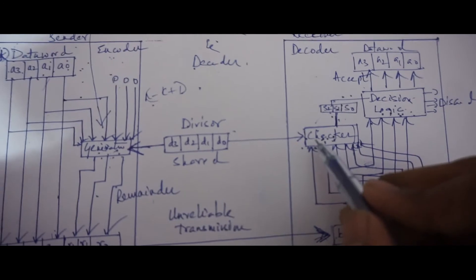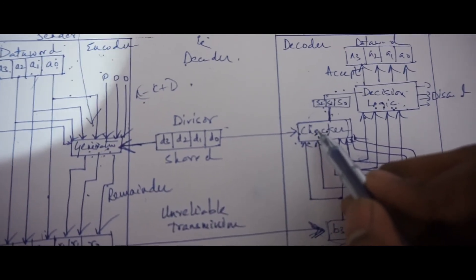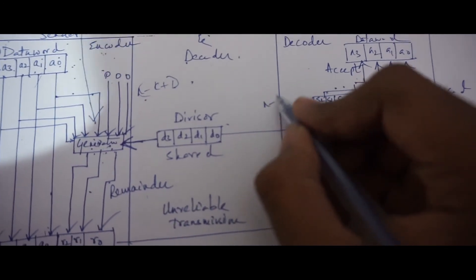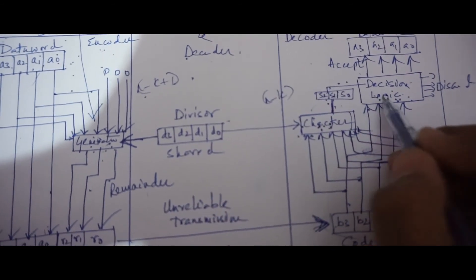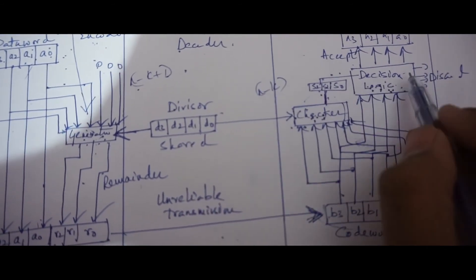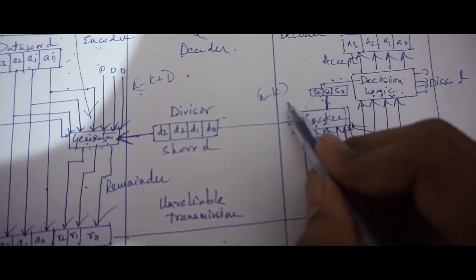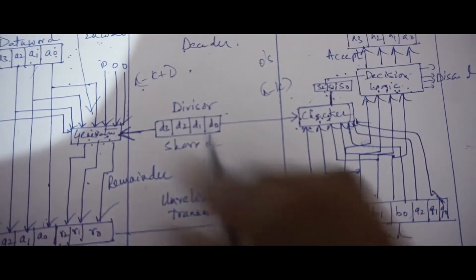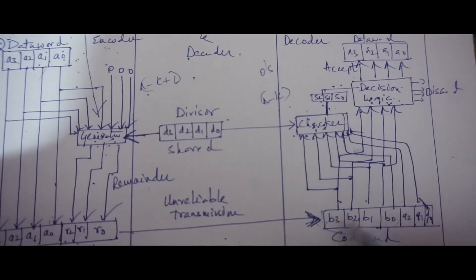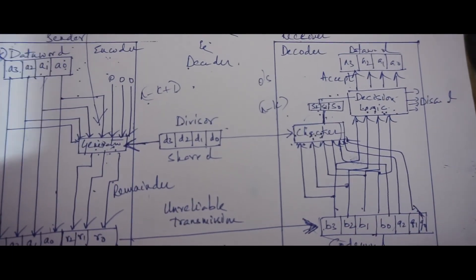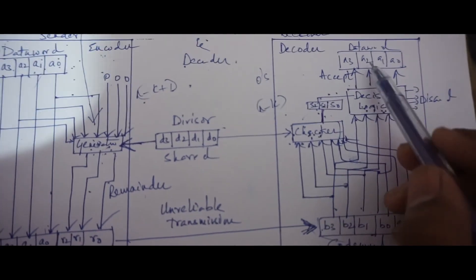The reminder produced by the checker is a syndrome of n minus k bits, which is fed to the decision logic analyzer. The analyzer has a simple function: if the syndrome bits are all zeros, the four most bits of the code word are accepted as the data word. Otherwise, the four bits are discarded.